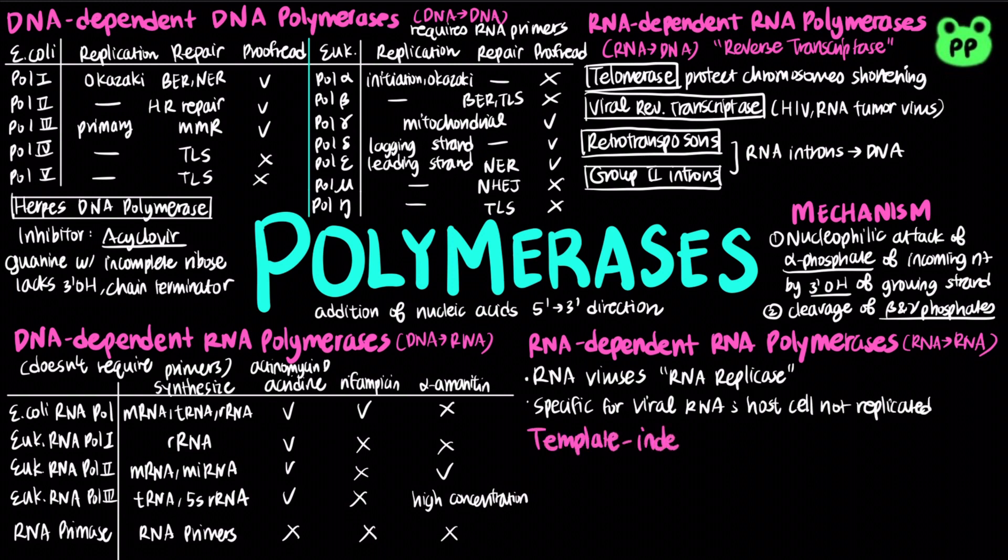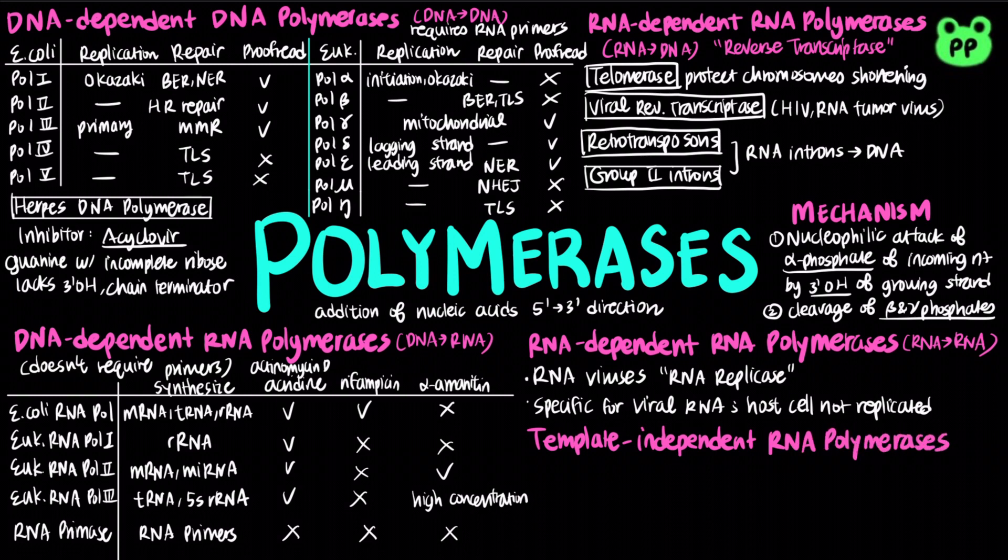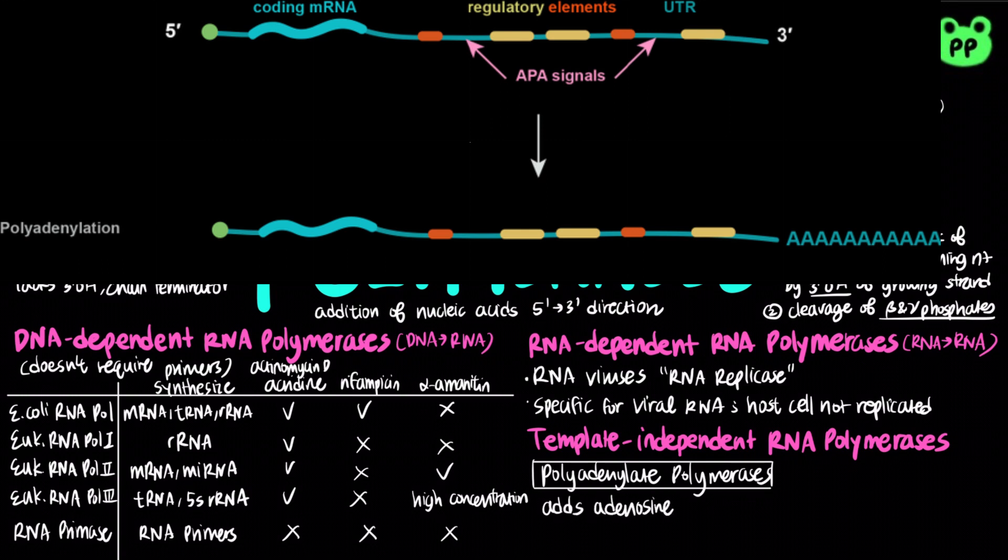Finally, template-independent RNA polymerases include polyadenylate polymerase, which adds multiple adenosine monophosphates to the 3 prime end of mRNA primary transcript to protect it from degradation.